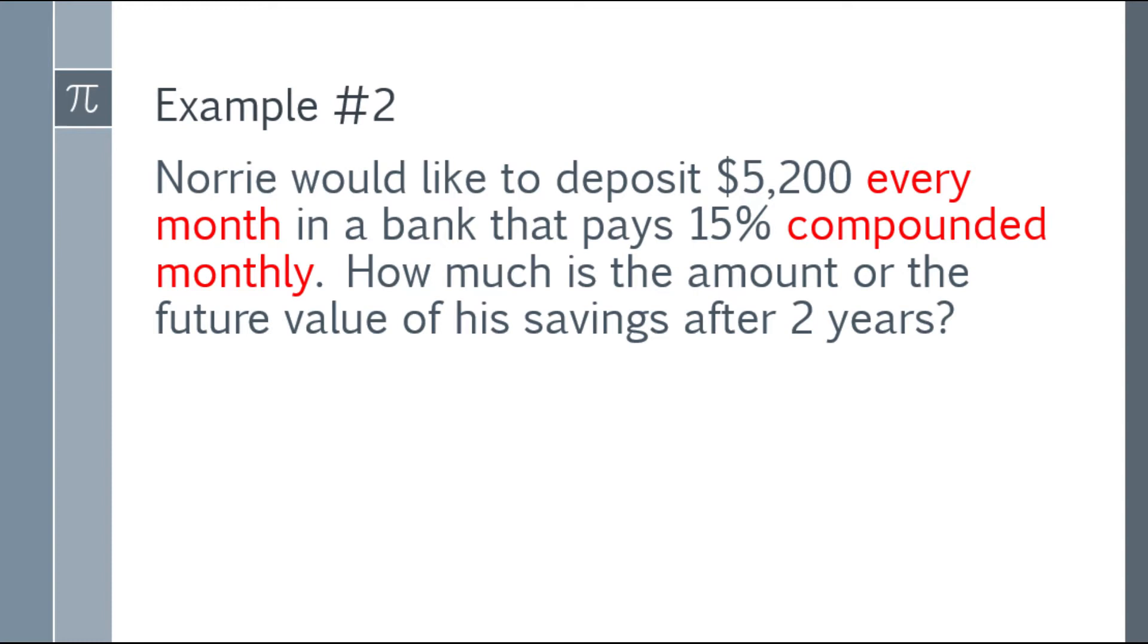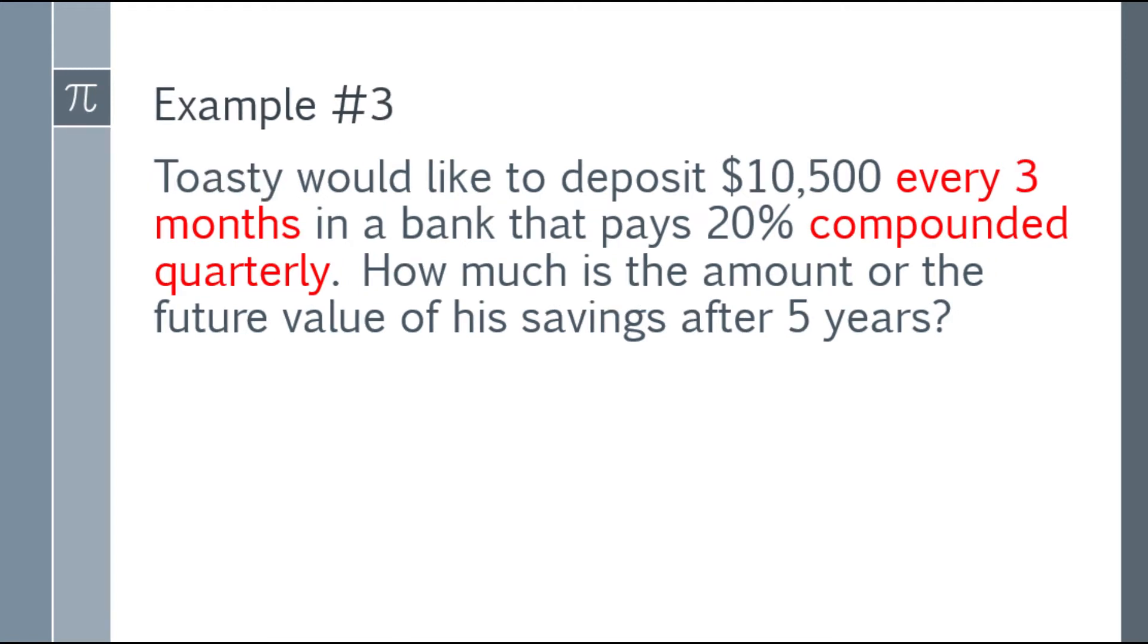Isa pang example. Every month payment and compounded monthly, so ordinary annuity yan kasi nagkasundo sila. Magbabayad every month and the bank compounds monthly. Sa third example, every 3 months and compounded quarterly. Since 3 months is 1 quarter, ordinary annuity to. If it's every 4 months, hindi pwede.